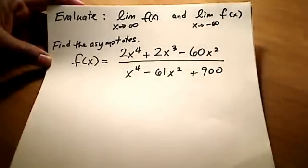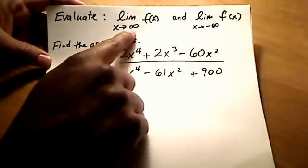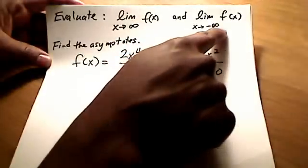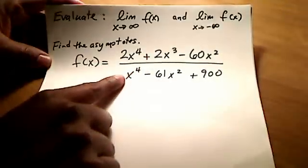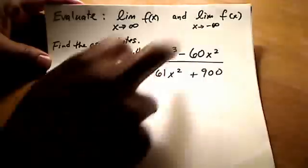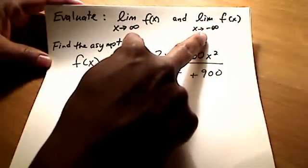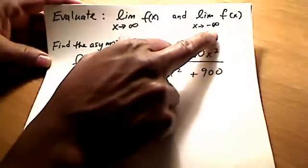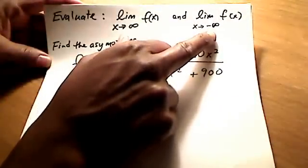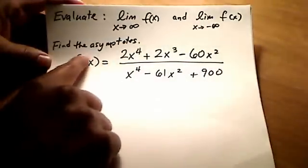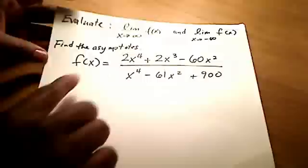This is a calculus problem in which we want to find the limit as x approaches infinity for a given function, as well as x approaching negative infinity for that same function. The function we have is a rational function. What these two limits really want us to find are the horizontal asymptotes — as we go off to negative or positive infinity, we're looking for horizontal asymptotes. They also want us to find all vertical asymptotes.